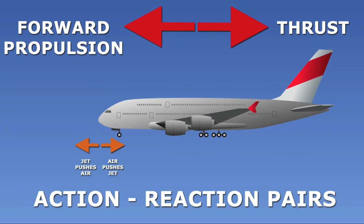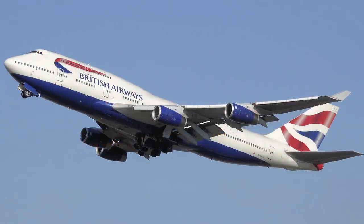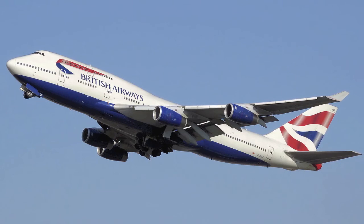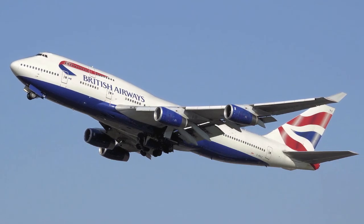If you want to get the most out of the motion of your object, it's good to know about action and reaction pairs. For example, with big jetliners, they fly at very high altitudes where the air is thin. Thin air means there'll be less force pushing back on the plane. The plane gets the most out of its forward propulsion and uses less fuel.